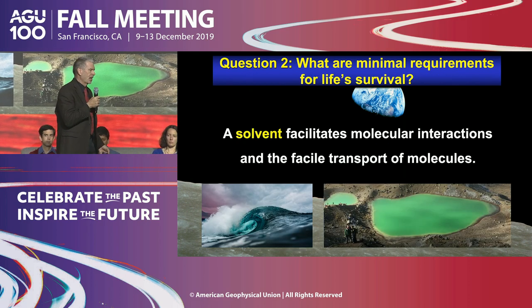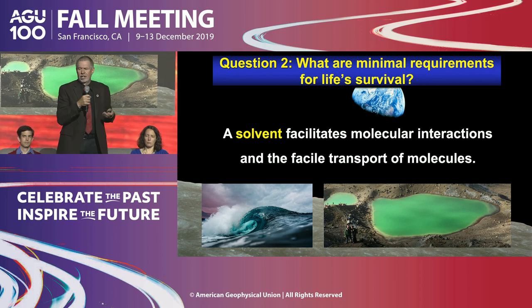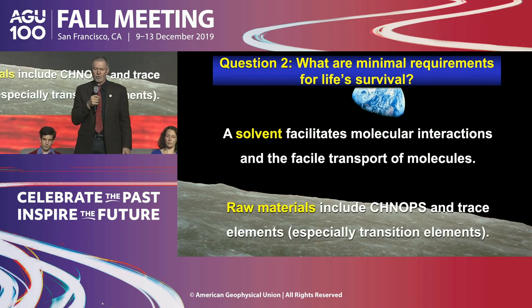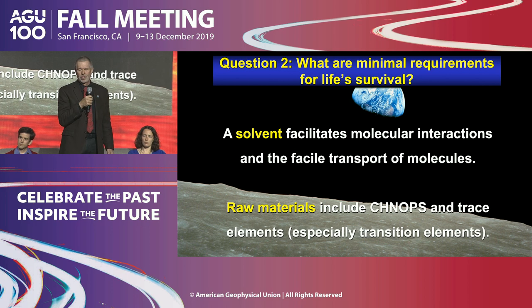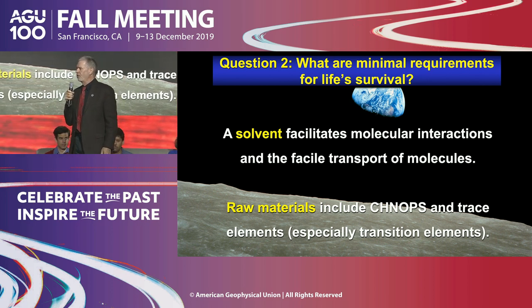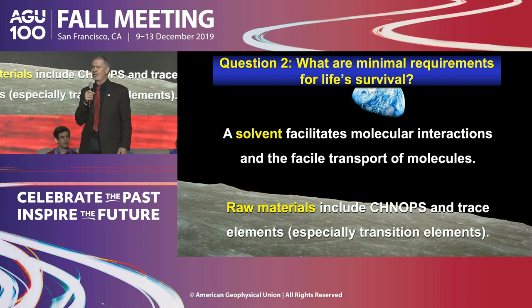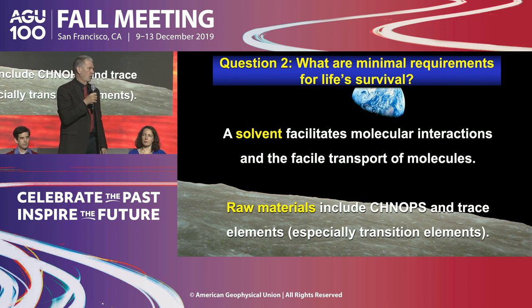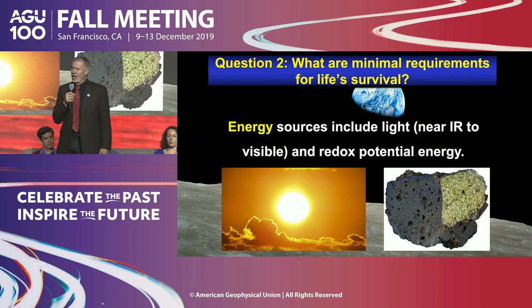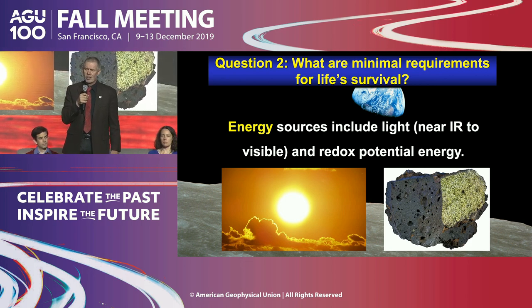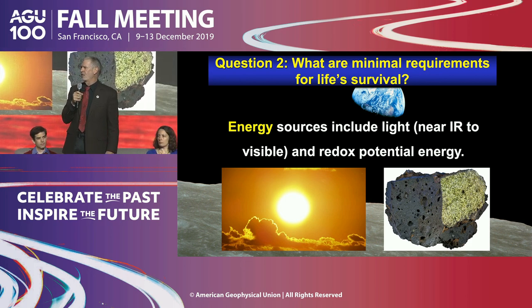A solvent facilitates molecular interactions and transport. The raw materials include carbon, hydrogen, nitrogen, oxygen, phosphorus, sulfur, and also probably transition elements — available in pretty much any terrestrial planet or moon. For energy, they emphasize light energy and photosynthesis, but also redox potential energy. I want to describe some work recently published by Shawna Morrison and colleagues, which looked at different ways that planets create redox gradients.